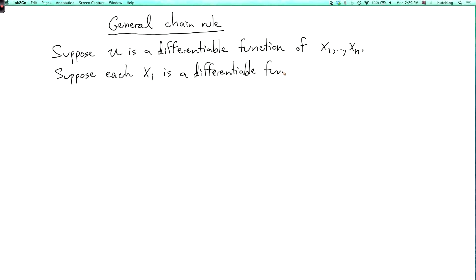So here's the general chain rule. Suppose that u is a differentiable function of n variables, x1 through xn. And the definition of differentiable in this case is sort of an obvious generalization of the two-variable case. Now suppose that each of these variables xi is a differentiable function of some other variables, let's say t1 through tm.